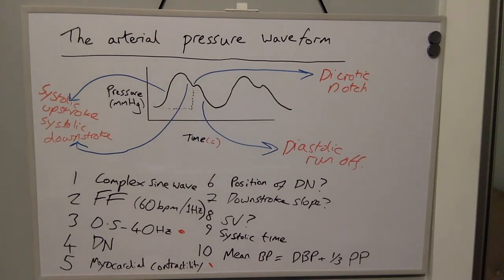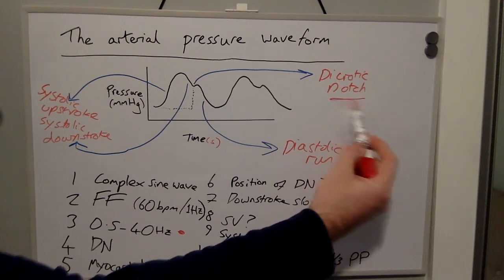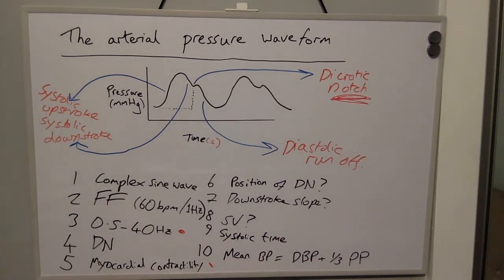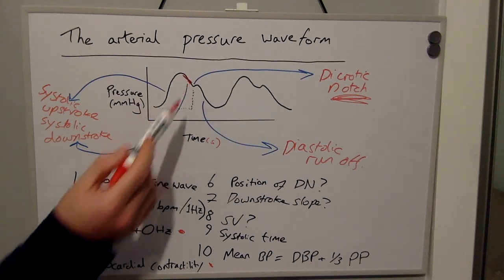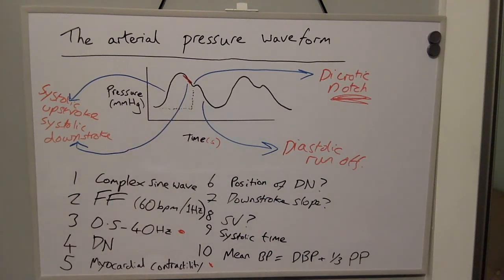The position of the dicrotic notch on the downstroke reflects peripheral vascular resistance, and the downstroke slope indicates resistance to outflow, for example if the patient was vasoconstricted.